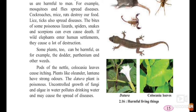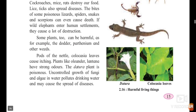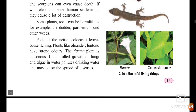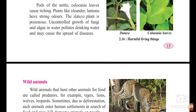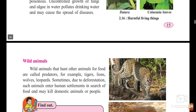The uncontrolled growth of fungi and algae in water pollutes drinking water and may cause the spread of diseases. If algae and fungi start to grow in stored water, it can pollute that water and lead to diseases such as typhoid and cholera. These were the harmful living things, and we have also seen the useful living things.